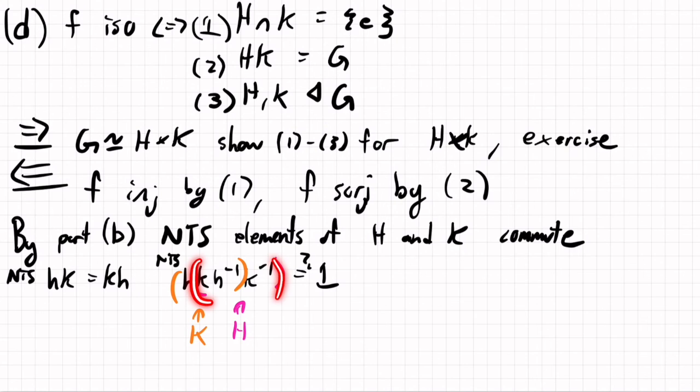So what we have is something in this, in the pink stuff, so the pink stuff is in h, and then this element, little h, is definitely in h. So we conclude that hk h inverse k inverse is in h. And from the orange, we see that this part is in k, but also k inverse is in k, by the inverse axiom. So then it's also in k, so it's in the intersection, but that's equal to the identity.